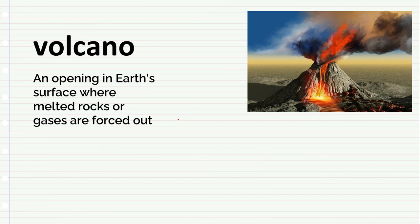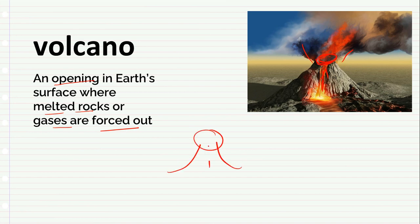A volcano is an opening in the earth's surface where melted rocks and gases are forced out. So a volcano is when the earth has an opening and from it comes melted rock and gas.